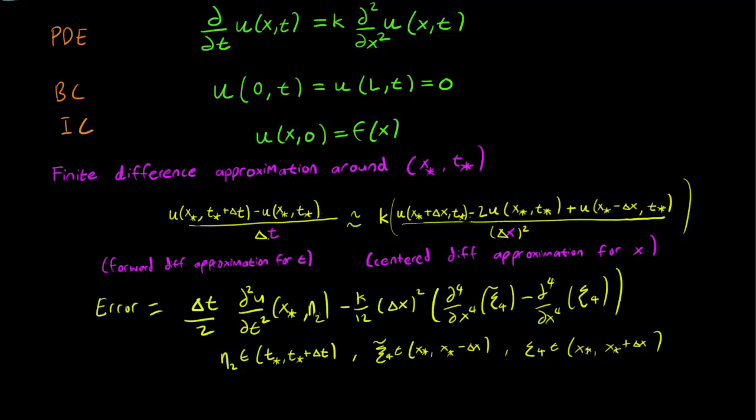It's delta t over 2 times the second derivative with respect to t at some unknown eta_2 between t and t plus delta t, minus k over 12 delta x squared, and the fourth derivative which depends on the c terms that lie between x minus delta x and x plus delta x.